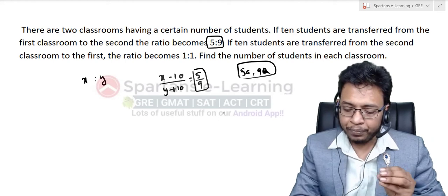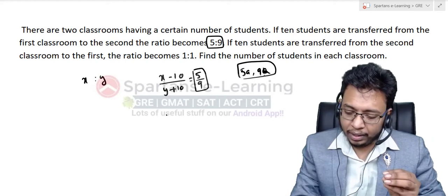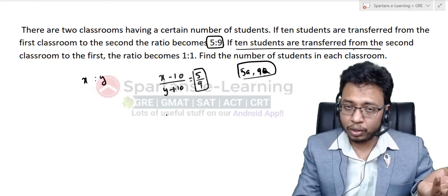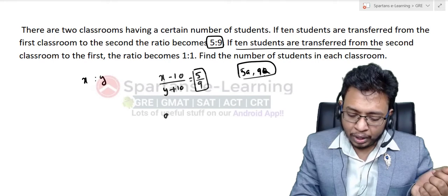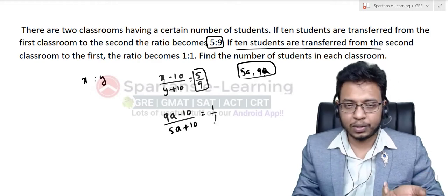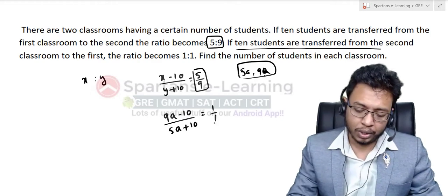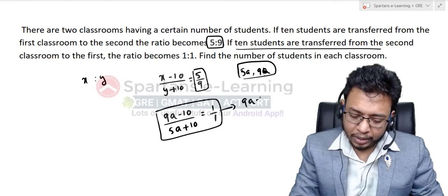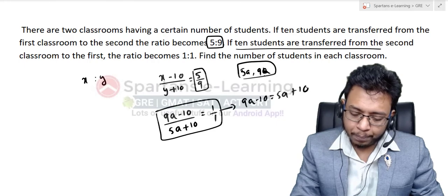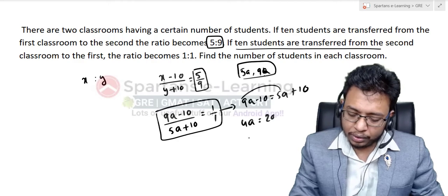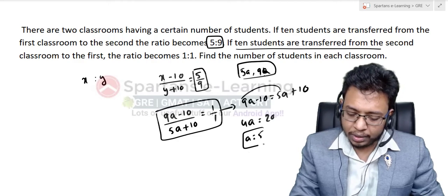Now from 9a, 10 students are transferred from the second class to the first class. So the second class becomes 9a minus 10, and the first class becomes 5a plus 10. The ratio becomes 1 to 1, so: 9a minus 10 equals 5a plus 10, which gives 4a equals 20, so a equals 5.